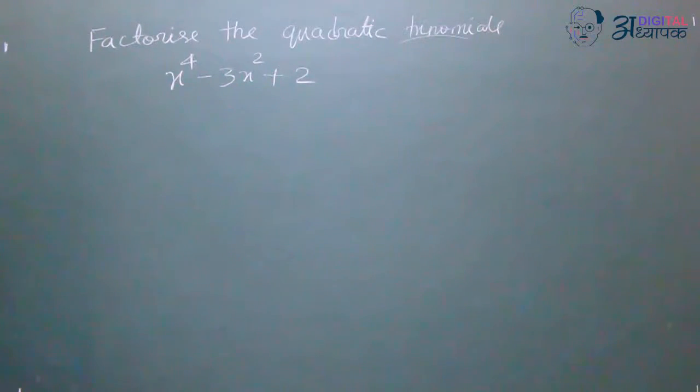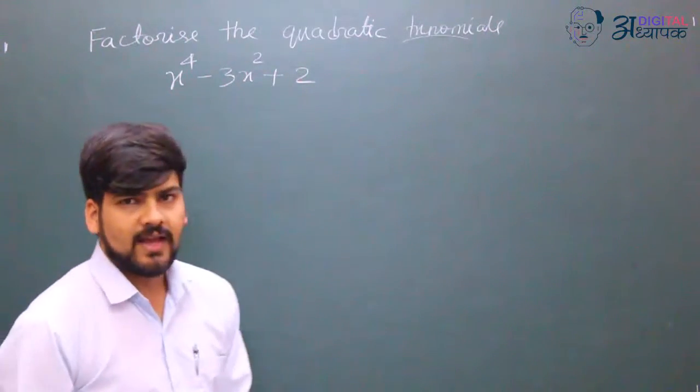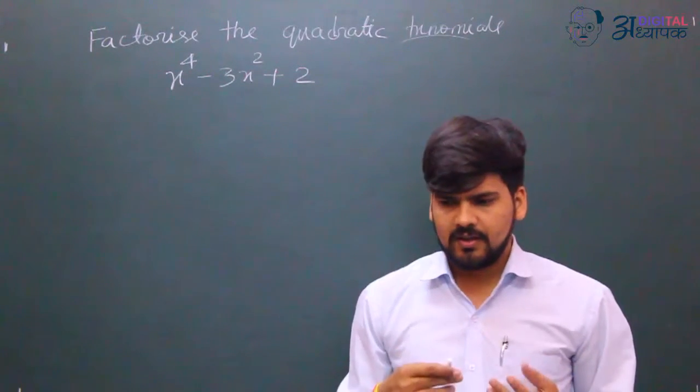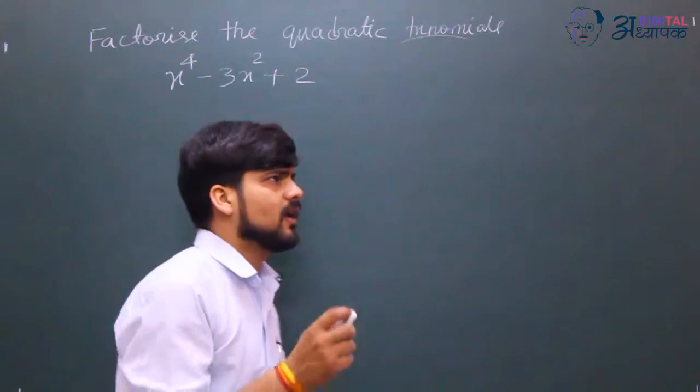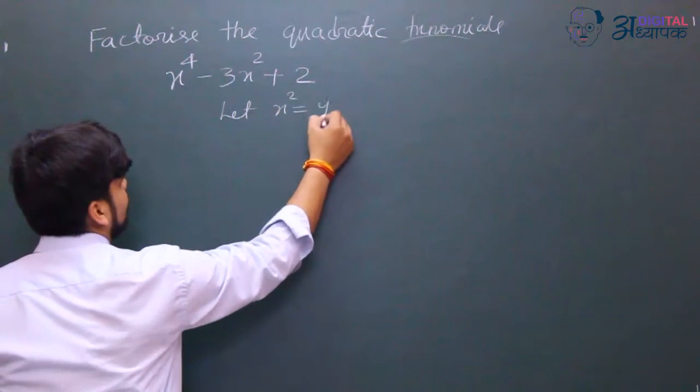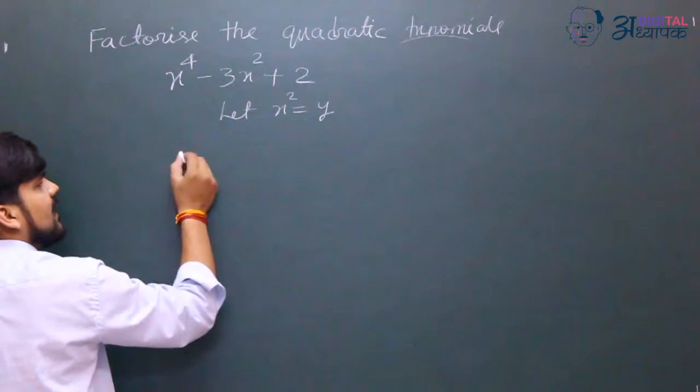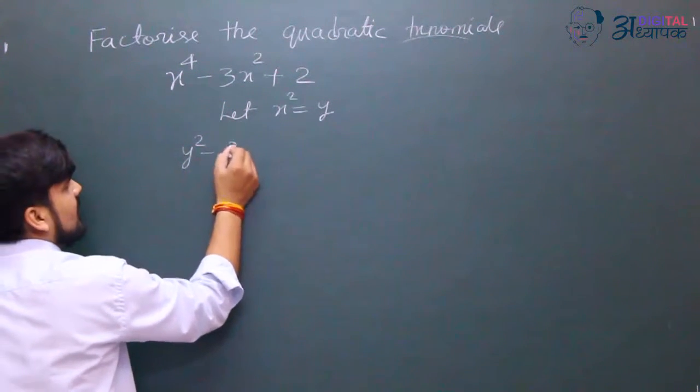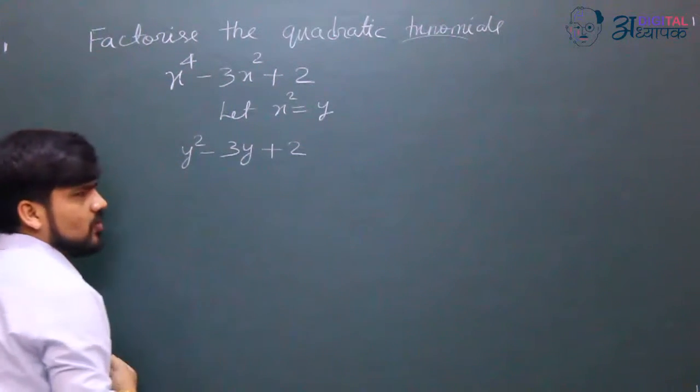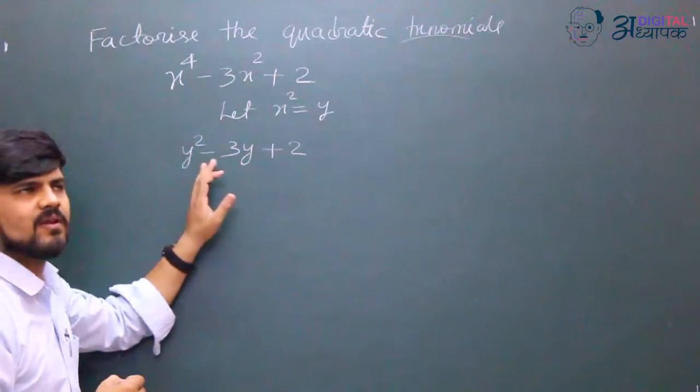Factorize x^4 - 3x^2 + 2. The equation has x to the power 4. How to simplify? I prefer to substitute. Let x^2 = y.